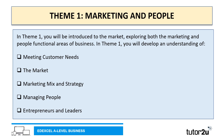Let's drill down a little bit deeper. Theme one is called Marketing and People, and in this theme you'll be introduced to the market, exploring both the marketing and people functions of business. In theme one, you will develop an understanding of the following areas: meeting customer needs, the market, marketing mix and strategy, managing people, as well as entrepreneurs and leaders.